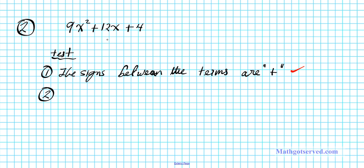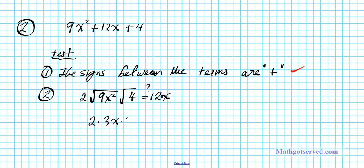There should be a special relationship between the three terms: if you double the square root of the first and the last term, do you get the middle term? Is 2 times the square root of 9x squared times the square root of 4 equal to 12x? The square root of 9x squared is 3x and the square root of 4 is 2. So 2 times 3x times 2 equals 12x. Is 12x equal to 12x? Yes. The polynomial passes the test and is a perfect square trinomial.